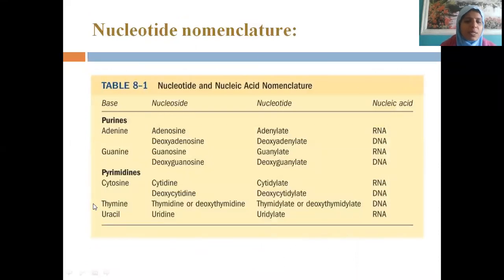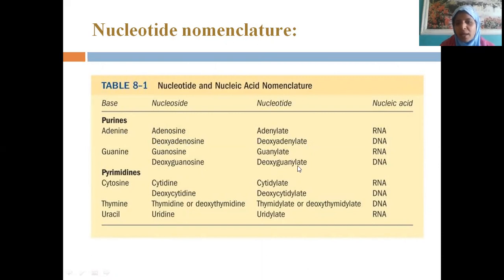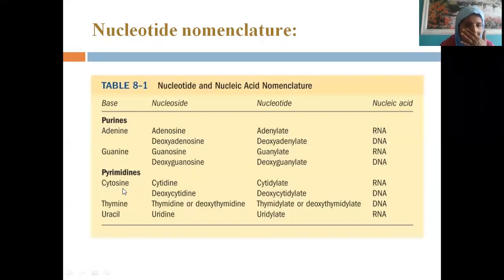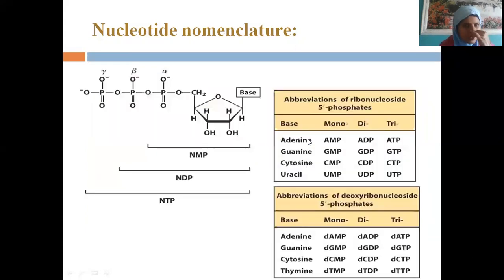A table from the textbook shows nucleosides, where phosphate is absent and only sugar and nitrogen base are present — adenosine, deoxyadenosine, guanosine, deoxyguanosine. If it is a nucleotide, terms like adenylate and deoxyadenosine are used. Purines are adenine and guanine; pyrimidines are cytosine, thymine, and uracil. Nucleosides have no phosphate group; nucleotides have the phosphate group. Nucleic acids are DNA and RNA.